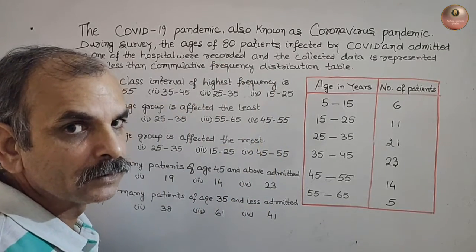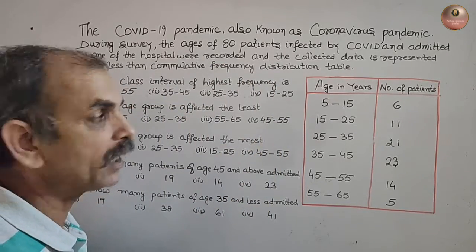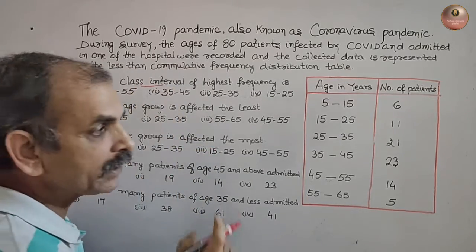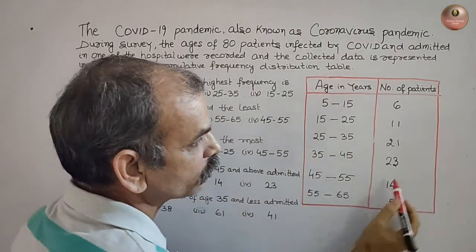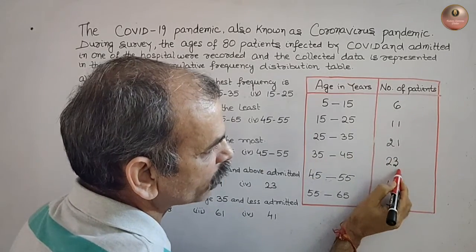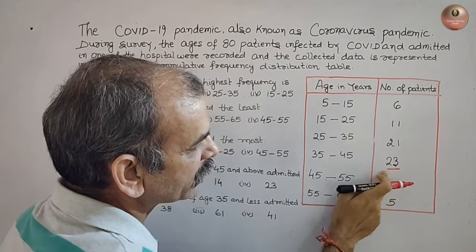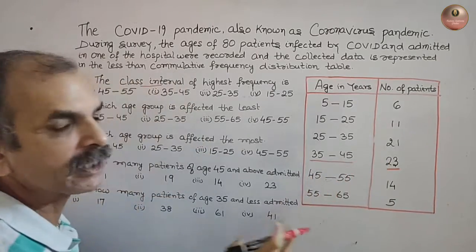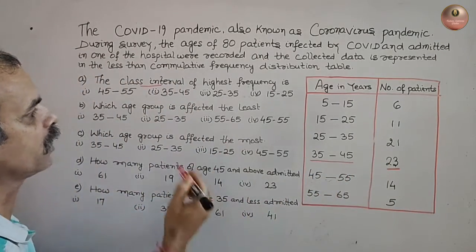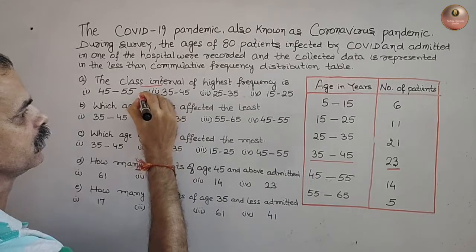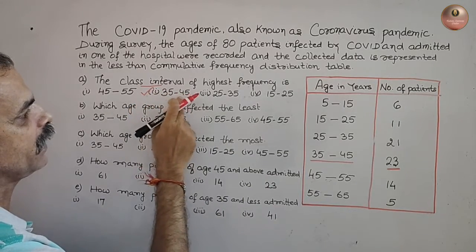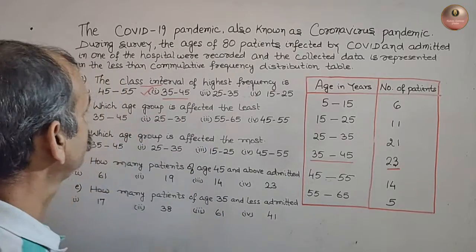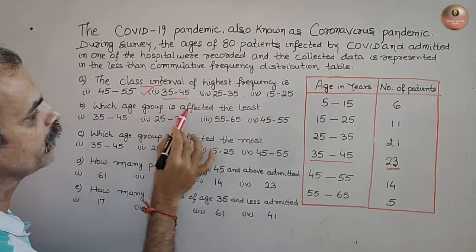So, the class interval of the highest frequency — look at the highest frequency, which is 23. The class interval for 23 is 35 to 45. So that is your correct answer: 35–45. Now next question: which age group is affected the least?